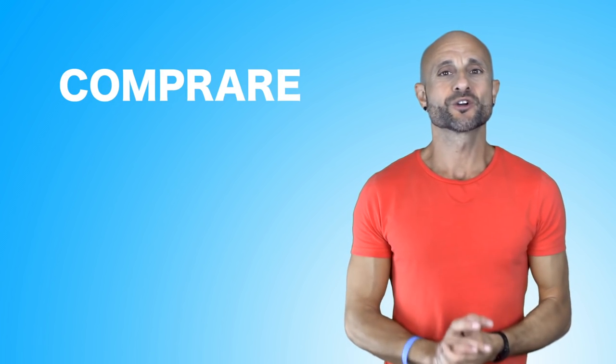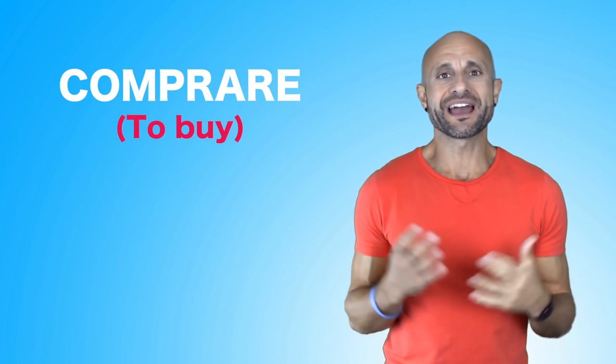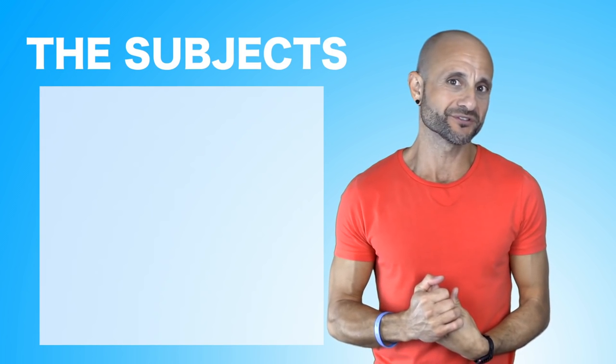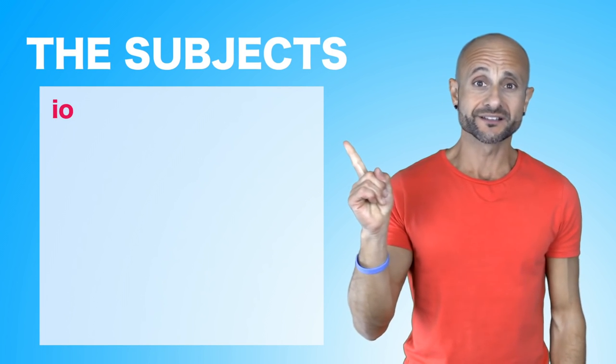The verb I picked for this first video is the verb comprare. Comprare means to buy. And we're going to look at the present tense, okay? So nothing too scary. Now the present tense, first of all, do you know what the six possible subjects are for Italian verbs? You probably do. So it's io, I.